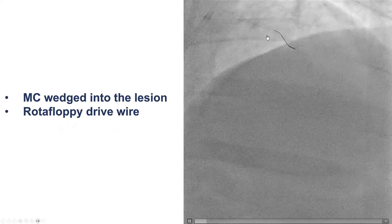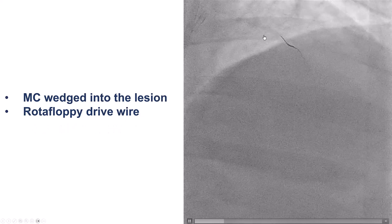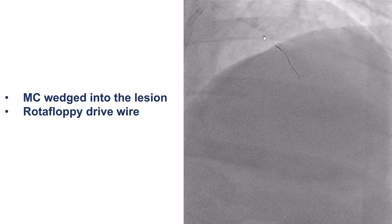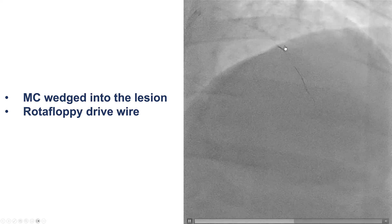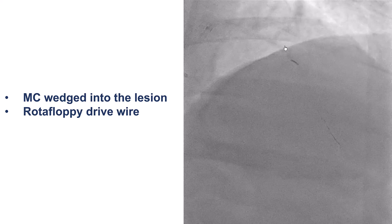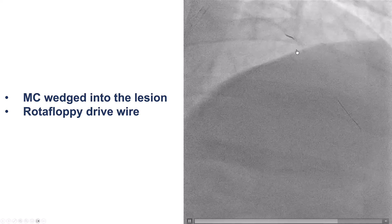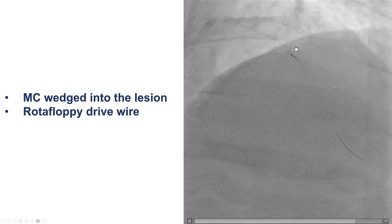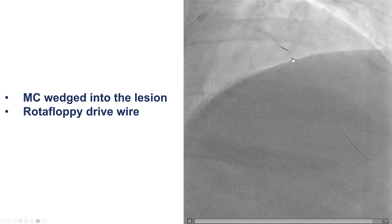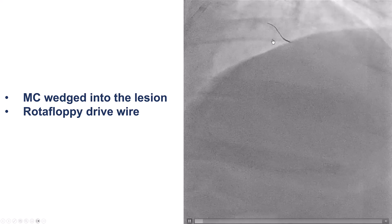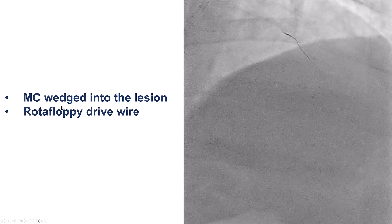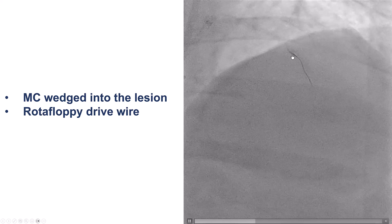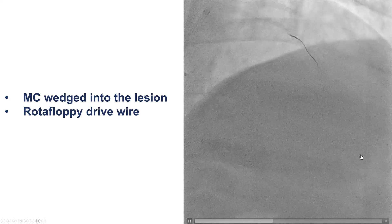One option for patients like this is to use laser. However, laser over polymer-jacketed wires can cause melting of the wire, so we didn't want to use this option since we had crossed with the Fielder XTR. Another option is to advance the microcatheter as far as possible into the vessel, remove the pre-existing wire, and insert a new guide wire. In this case, we inserted a rotafloppy wire deeply into the vessel.